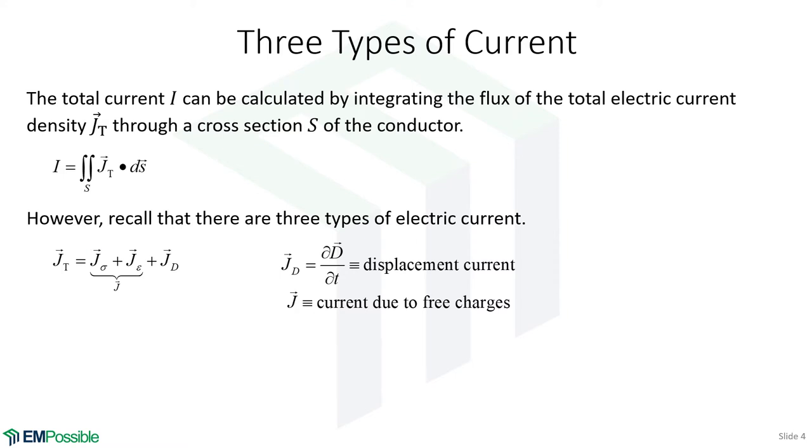Remember, there was conduction current. That's free charges down a wire satisfying Ohm's law. We had free charges through an insulator that followed the continuity of current equation. And then there was displacement current. This is that momentary current that happens as charges are being displaced within a dielectric bound charges. The free charges are the conduction and the convection current. We lump those together into a single J term that we see in Maxwell's equations. This displacement current is the time rate of change of the electric flux.